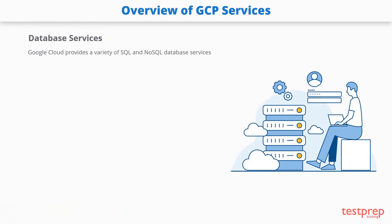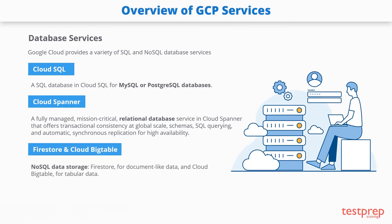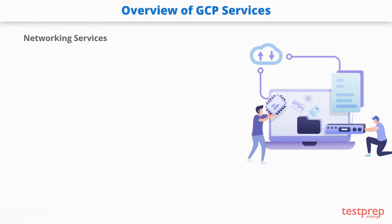Google Cloud provides a variety of SQL and NoSQL database services. Cloud SQL is a SQL database service for MySQL or PostgreSQL databases. Cloud Spanner is a fully managed relational database service offering transactional consistency at global scale, with schemas, SQL querying, and automatic synchronous replication for high availability. For NoSQL data storage, there are two options: Firestore for document-like data, and Cloud Bigtable for tabular data. You can also set up your preferred database technology on Compute Engine using persistent disks.